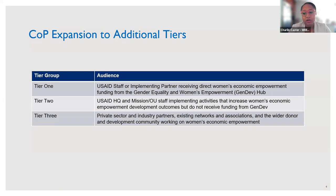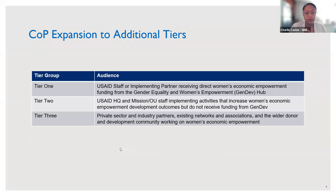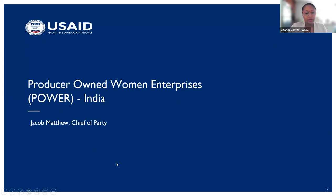We are looking to expand the Community of Practice. Up to this point we've focused on tier one, which includes USAID staff and implementing partners receiving direct funding from the GenDev Hub working on women's economic empowerment activities. With this event, we're expanding to tier two, which includes USAID staff implementing women's economic empowerment activities but not receiving funding from the GenDev Hub. Moving forward, we will expand to tier three, which will include private sector and industry partners and the wider development community working on women's economic empowerment.